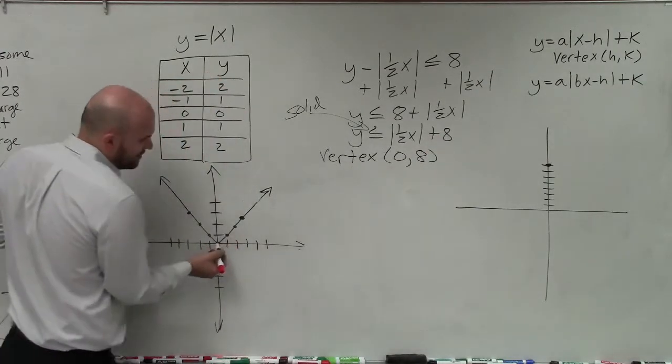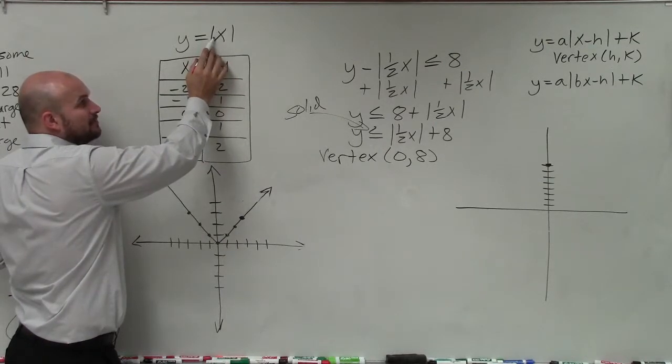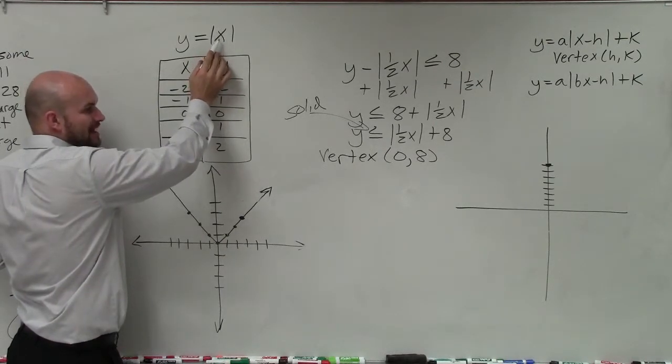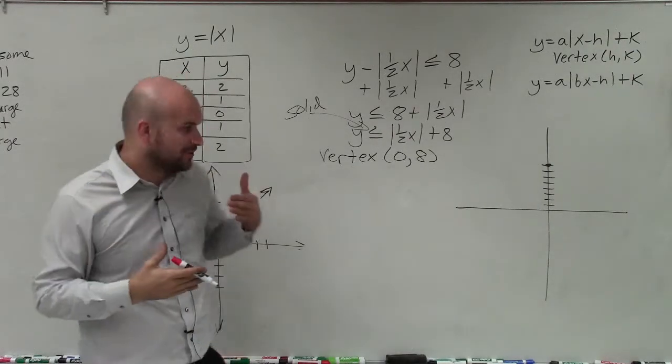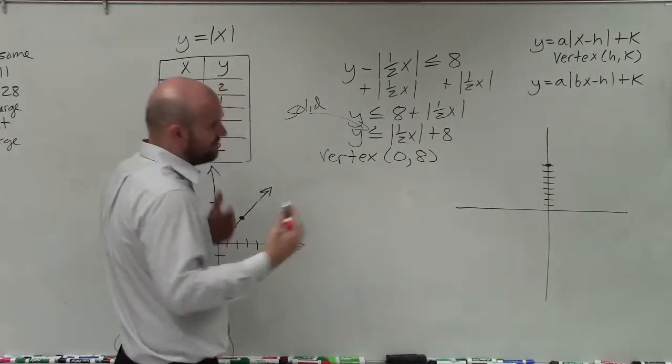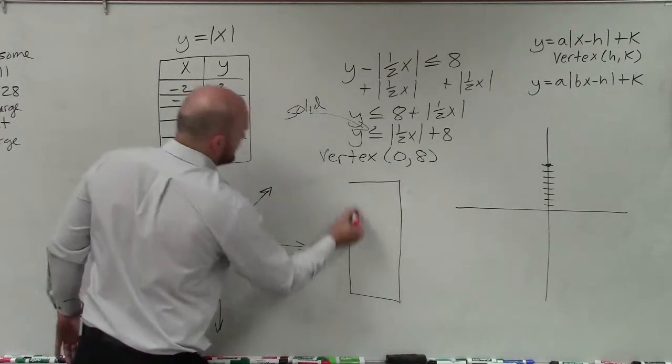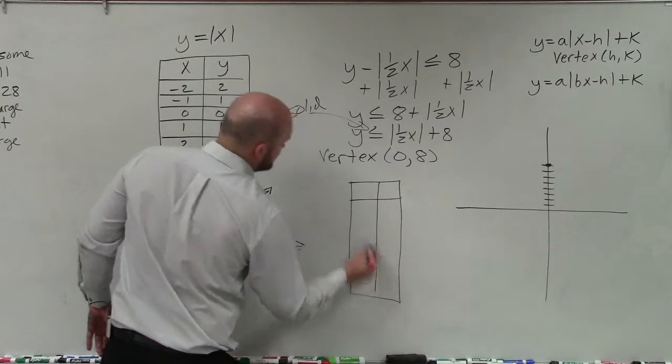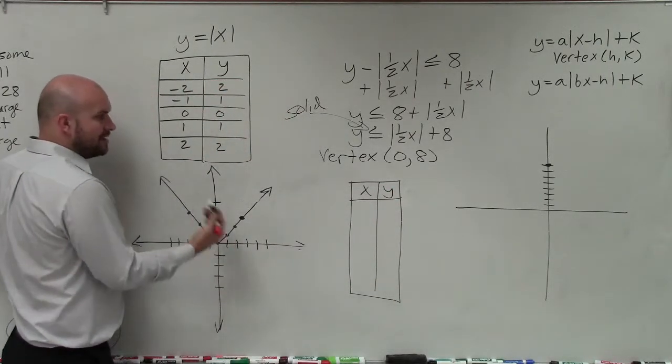Usually we like to just go over 1 up 1, over 2 up 2. But that was when you did not have a b being multiplied by your x. So the best way to understand and see how that works is just to create a table of values. What's nice about the absolute value function is that it has a line of symmetry.